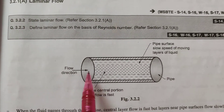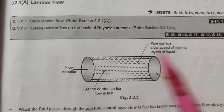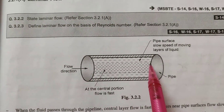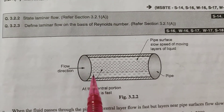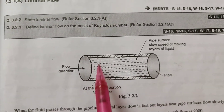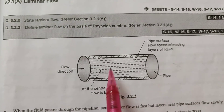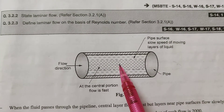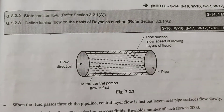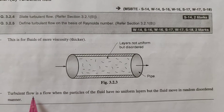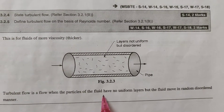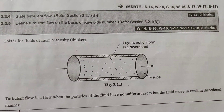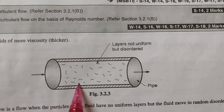In laminar flow, the fluid moves in one direction. The center of the pipe flows fast as compared to the surface of the pipe. When particles of the fluid have no uniform layers, but the inner fluid moves in a random manner, that is turbulent flow. In laminar flow, it was flowing in one direction.